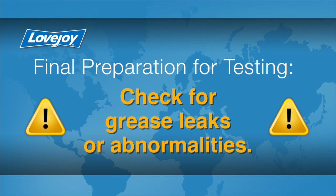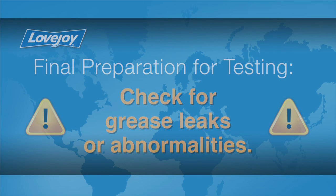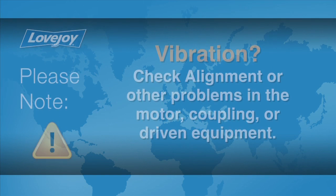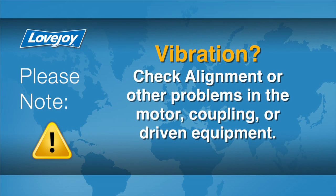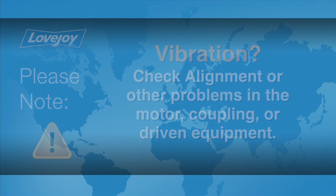The equipment can then be started up and tested. Check the coupling for any possible grease leaks or abnormalities. The coupling and equipment should run smoothly. If any vibration is detected, it could indicate there are alignment issues or other problems, possibly related to the motor, coupling, or driven equipment. These issues should be resolved prior to placing this coupling into operation.